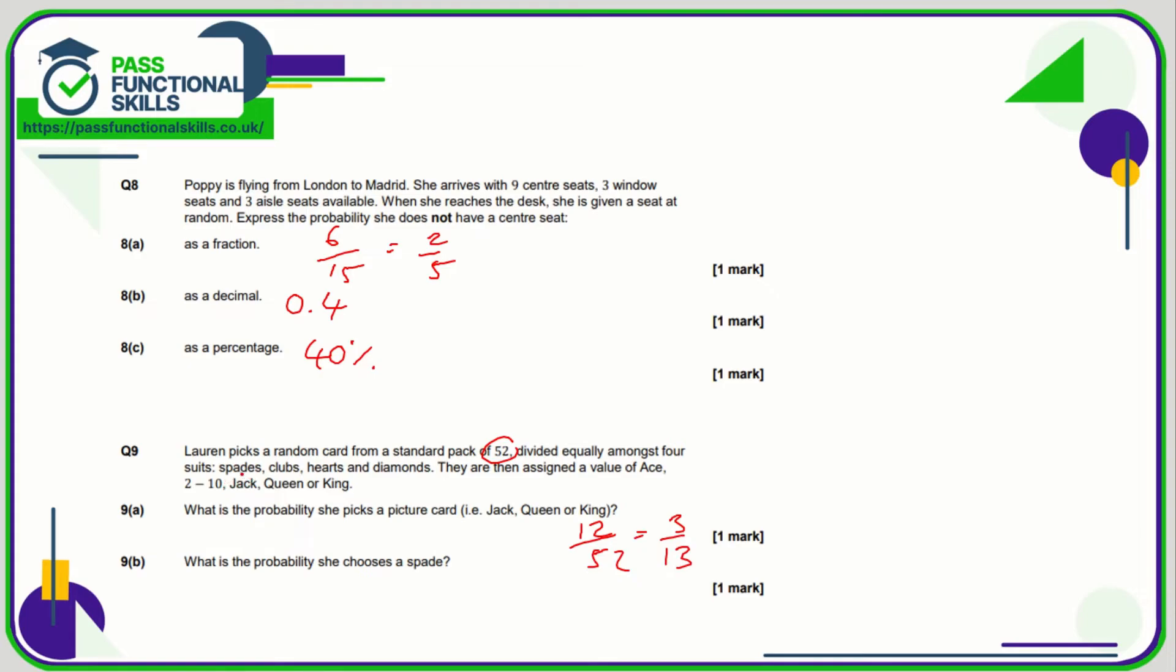What's the probability that she chooses a spade? Well we know there are four suits, there's the same number of spades as there are clubs, hearts, and diamonds, so therefore that's 1 out of 4, which is 1 quarter.